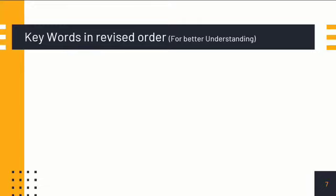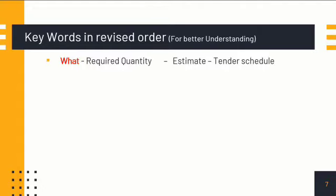We have already seen the keywords in simple terms. Now we have rearranged them for better understanding. The first keyword is 'required quantity,' found in the tender schedule. Initially, when at the field, we prepare the estimate — that is, the quantity of work to be carried out under each item in the Unified Standard Schedule of Rates. If the work is not available there, we go for non-schedule items. The work to be done is listed in the tender schedule.